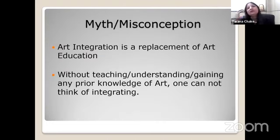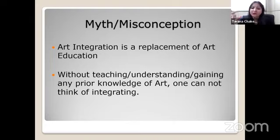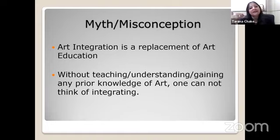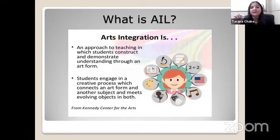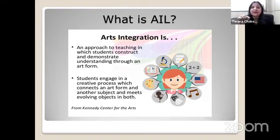It meets the learning objectives of art as a subject. Whenever we define the learning objectives before planning lesson plans, we define the learning objectives integrated with art, so the uniqueness automatically comes. There is also a myth — a misconception — that AIL is a replacement of art education. Without gaining any prior knowledge of art, one cannot think of integrating. But you should know that even with very little knowledge, you are still able to integrate it. There is no background knowledge required for art, even if you are a first-time learner. AIL is an approach to teaching in which students construct and demonstrate understanding through an art form.